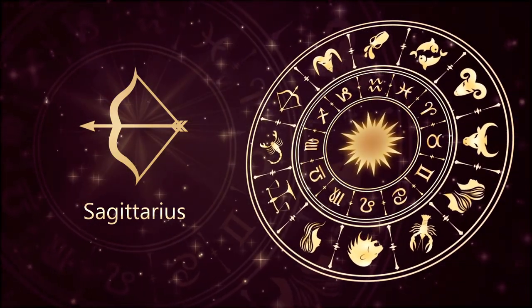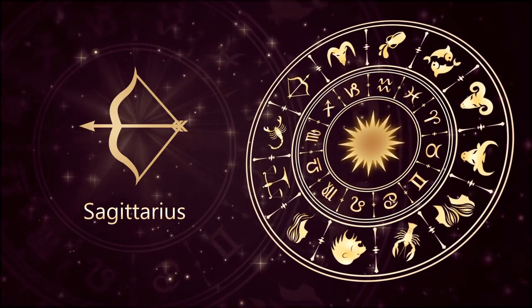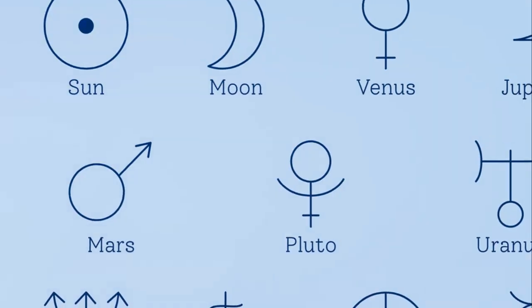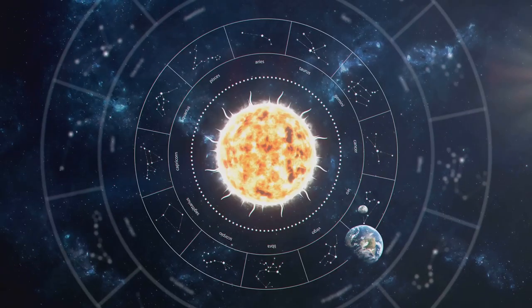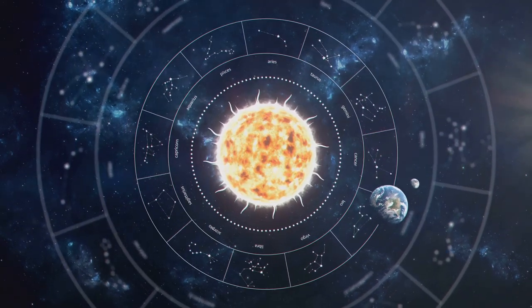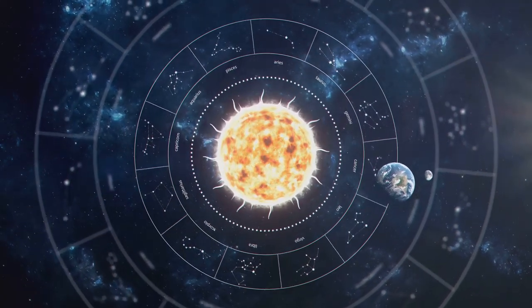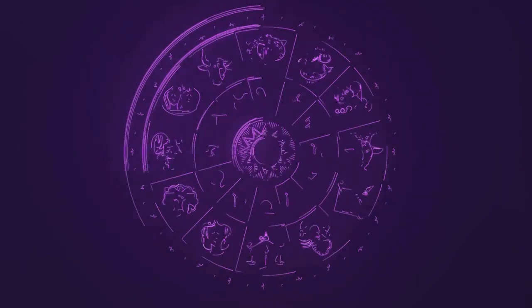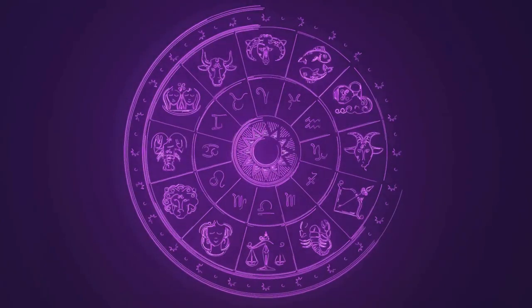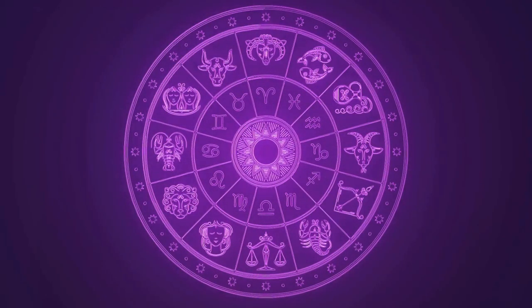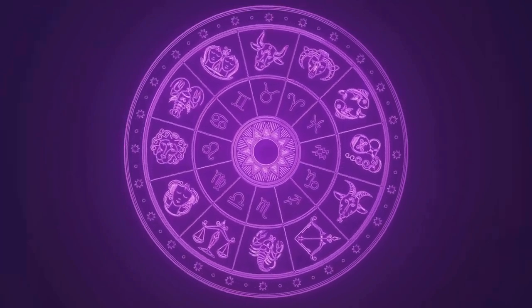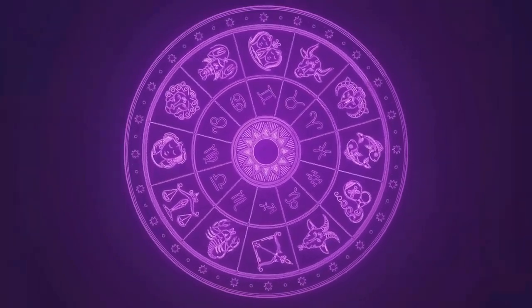They symbolize the natural flow of energy between two zodiac signs. When planets form a trine, they share the same element — either fire, earth, air, or water. This shared element creates a deep understanding, a sense of harmony, and an easy flow of energy between the signs involved.